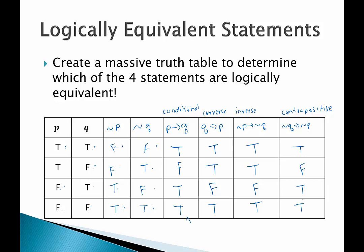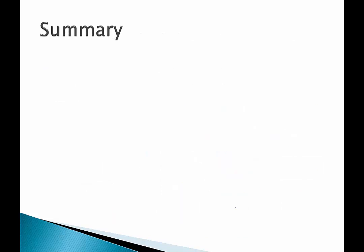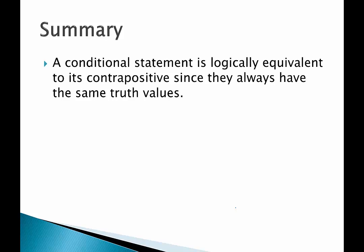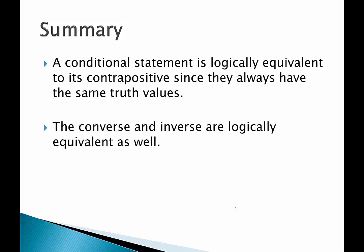Checking these out — the conditional and the contrapositive are logically equivalent because both give true, false, true, true. Also, the converse and the inverse are logically equivalent to each other: both give true, true, false, true. So a conditional is logically equivalent to the contrapositive, and the converse is logically equivalent to the inverse — meaning if the converse is true then the inverse is true, and if the converse is false then the inverse is false.